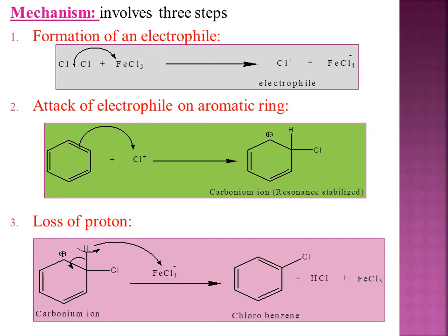Coming to the mechanism of chlorination: in step one, formation of electrophile — Cl-Cl reacts with FeCl3. The chlorine dissociates as Cl+ and Cl-. The Cl- attacks the iron (Fe), which is a metal and attracts the Cl- due to its positive nature, forming the Cl+ electrophile along with FeCl4-.